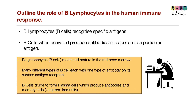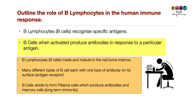Exam question: Outline the role of B lymphocytes in the human immune response. B lymphocytes (B cells) recognise specific antigens — it's very important to state that. When activated, B cells produce antibodies in response to a particular antigen.